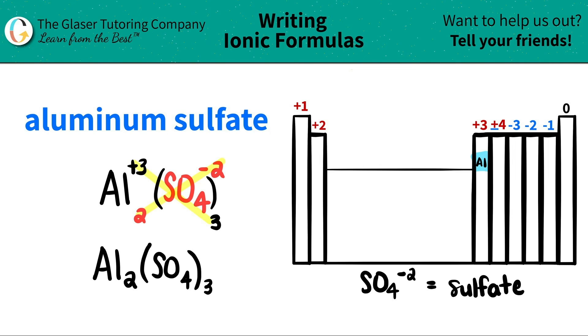And now I'm done. So aluminum sulfate is Al2(SO4)3.